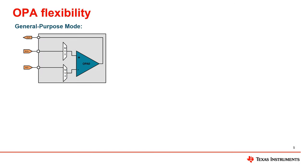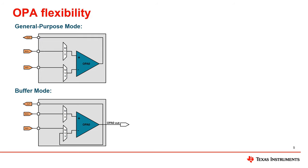The first is the general purpose mode, which connects the input and output to the OPA — the same function as an external operational amplifier. Customers can configure it at will, further amplifying its flexibility. The second is the buffer mode, which buffers the input through the OPA with a gain of 1. This helps assist in applications that need low output impedance.